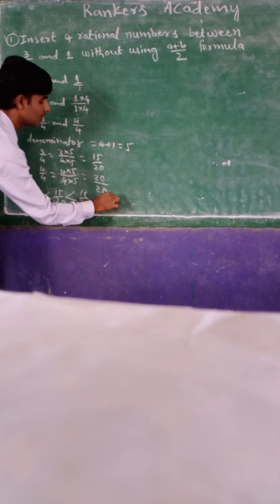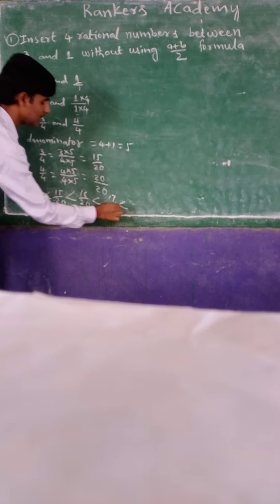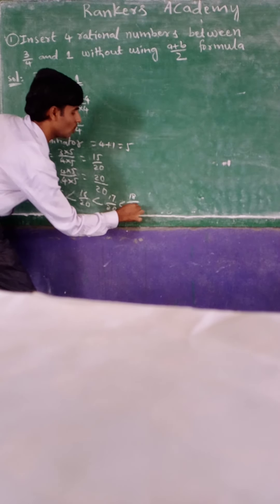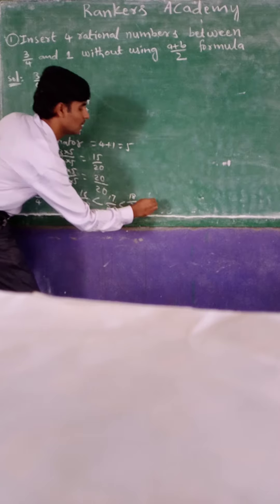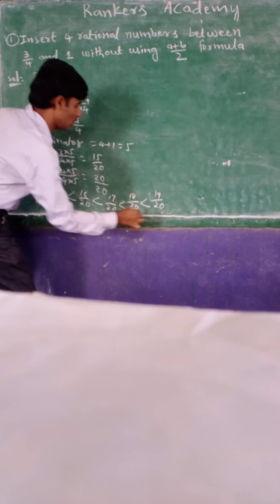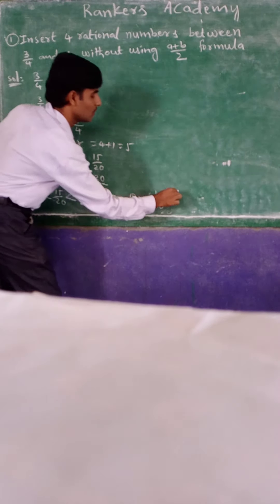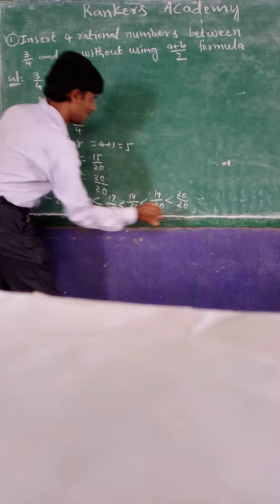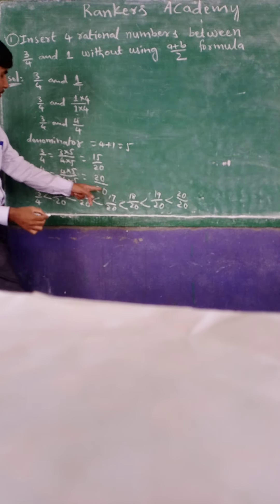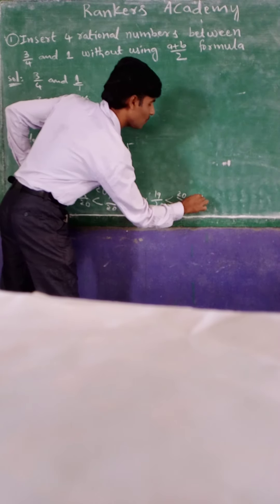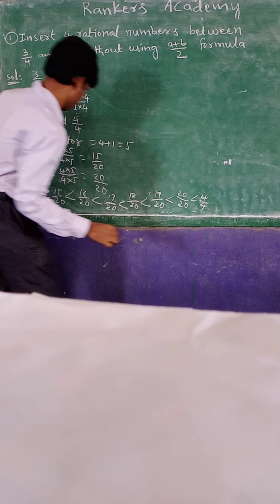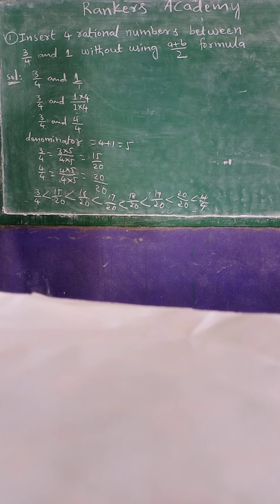16 after 17, 17/20, less than 17 after 18/20, next 19/20, next 20/20. Here 20/20, 20 by 20 again what will it come, 4/4, means we will get the 1.